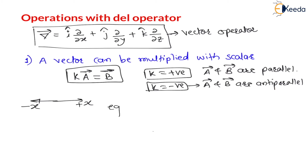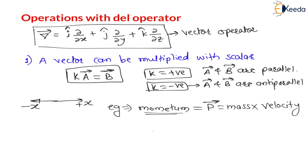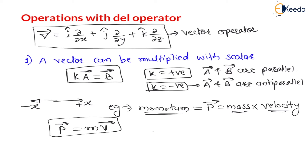For example, in engineering a very famous example is momentum. Momentum is represented by vector p and is a product of mass and velocity. Mass is a scalar quantity and velocity is a vector quantity. Therefore momentum, which is a vector quantity, is mass into velocity. This is just an example.